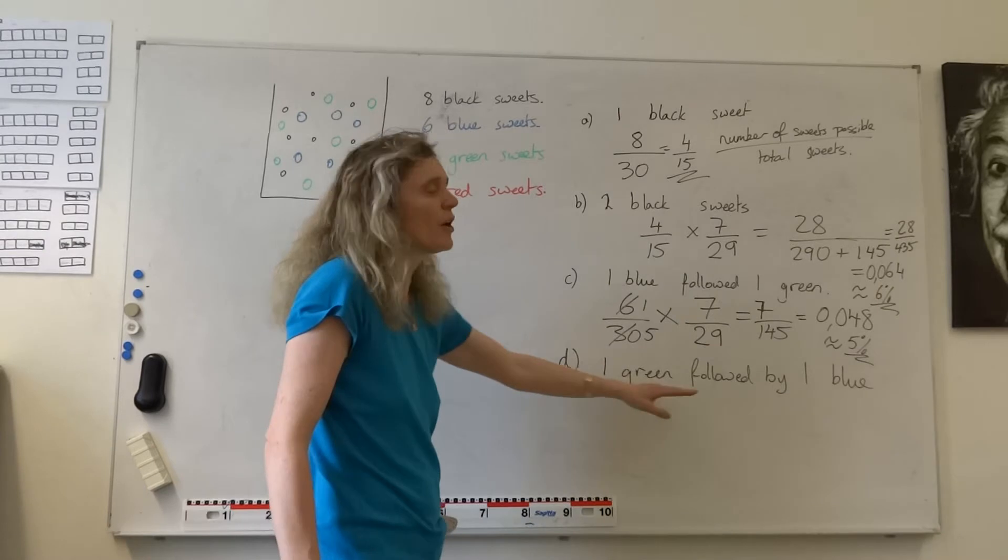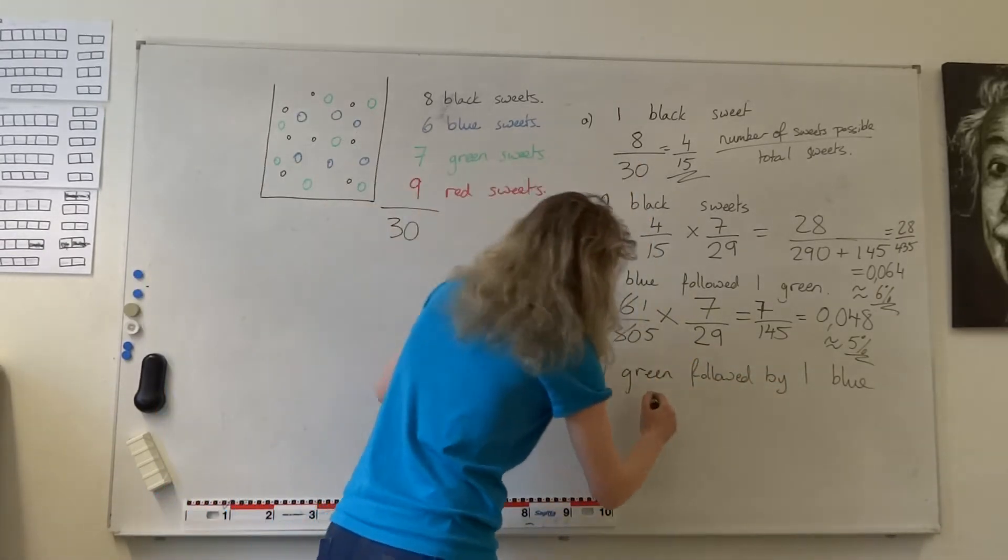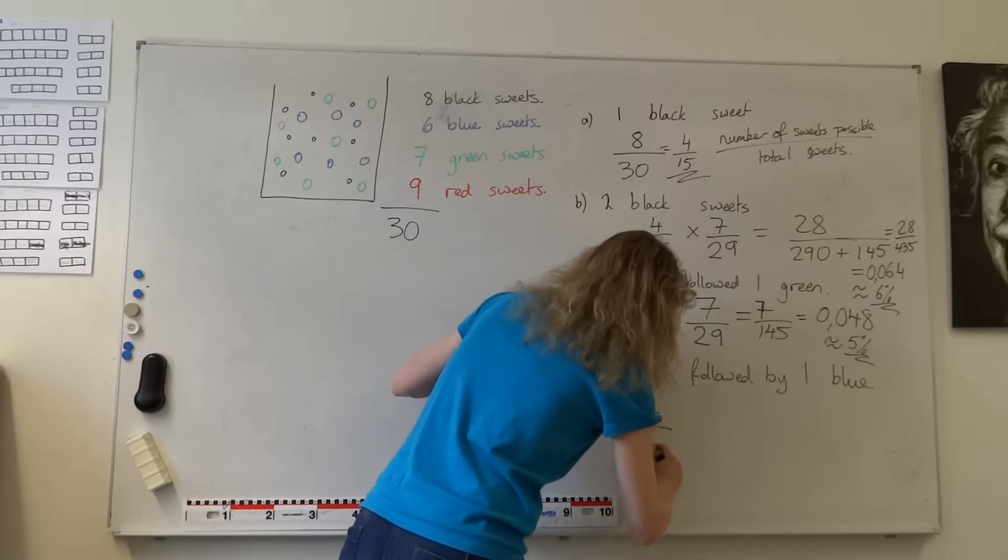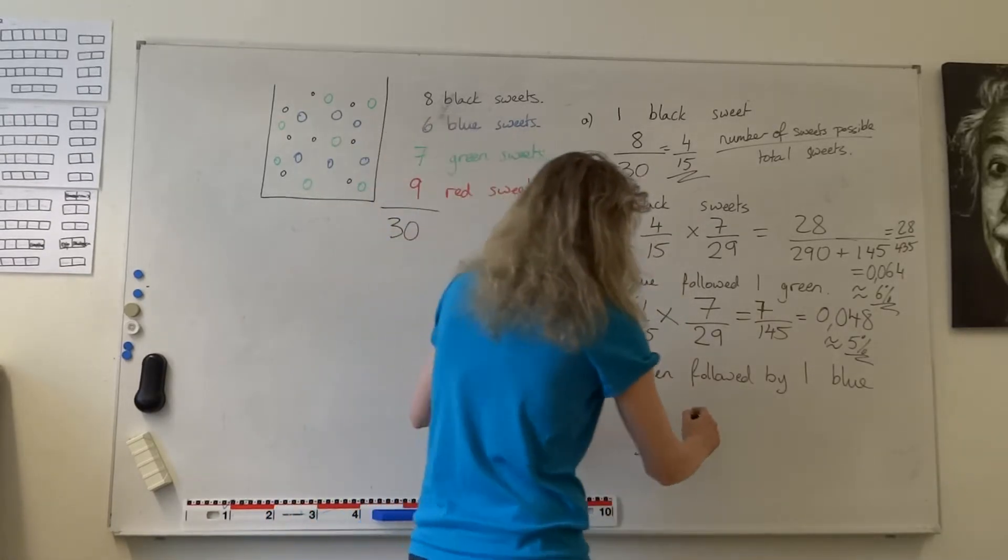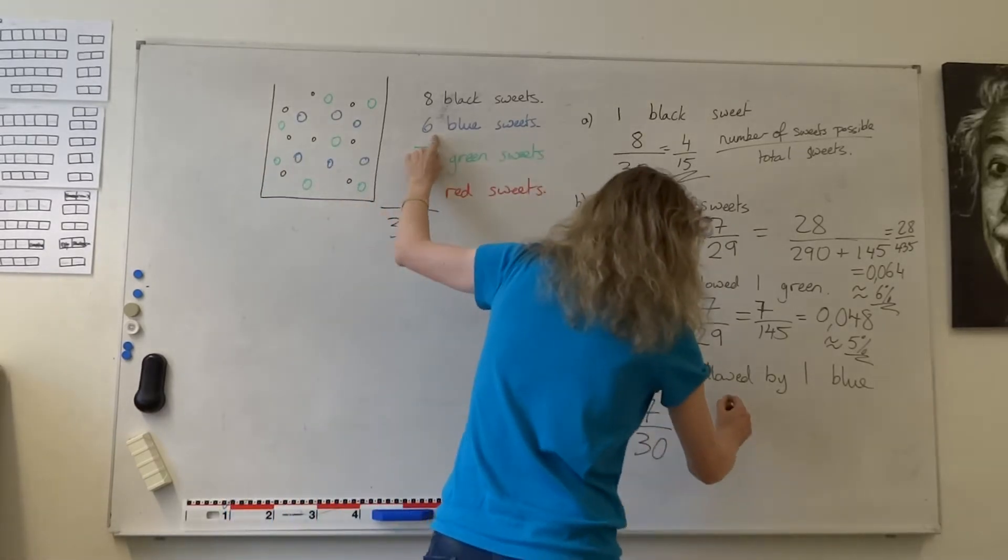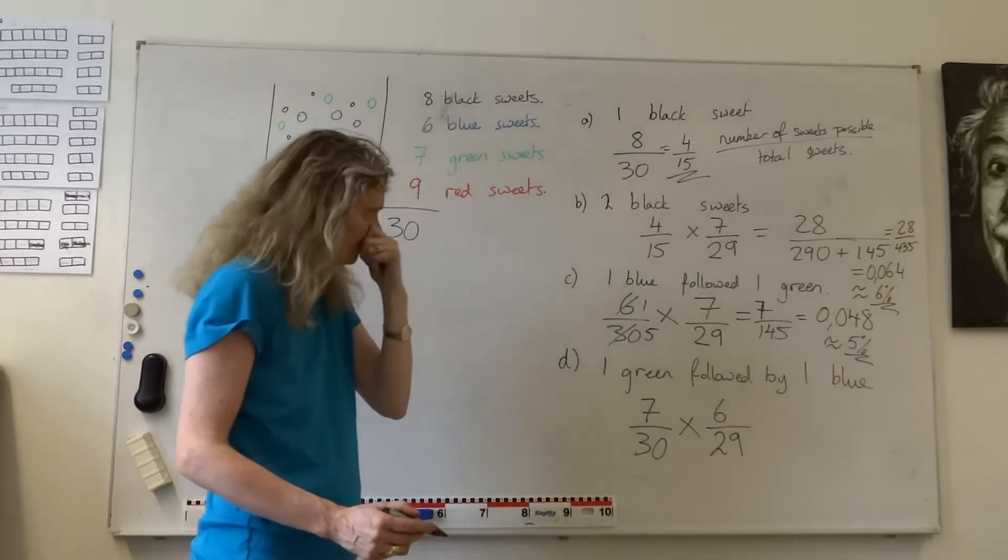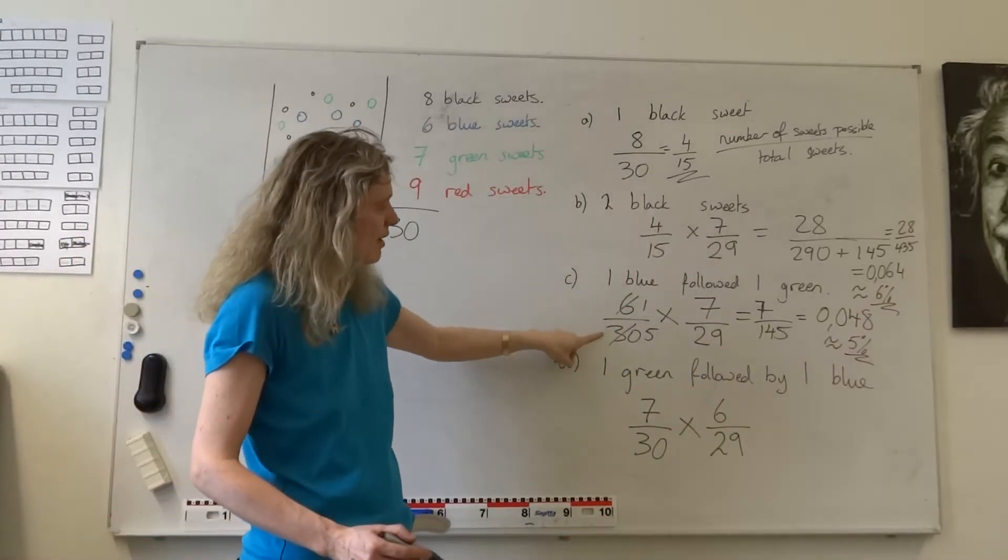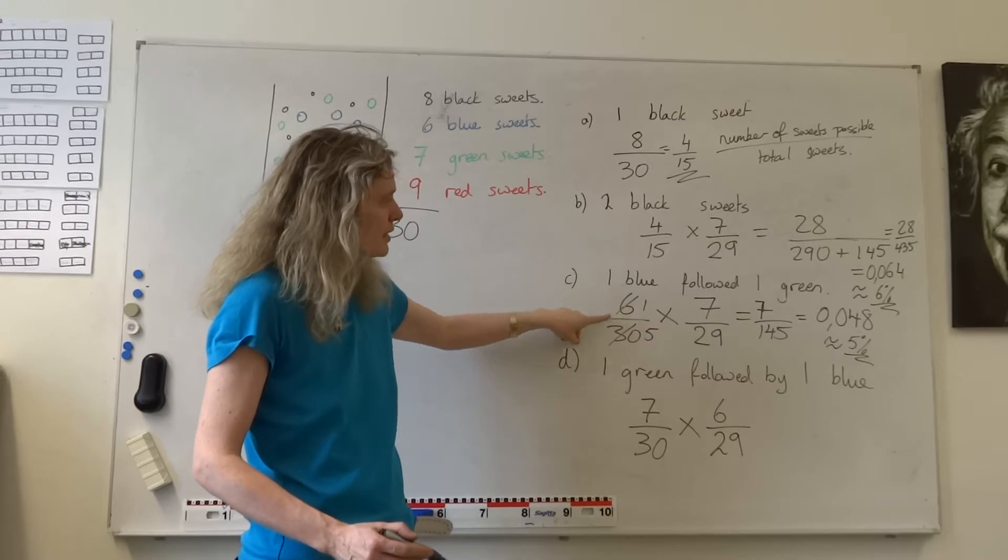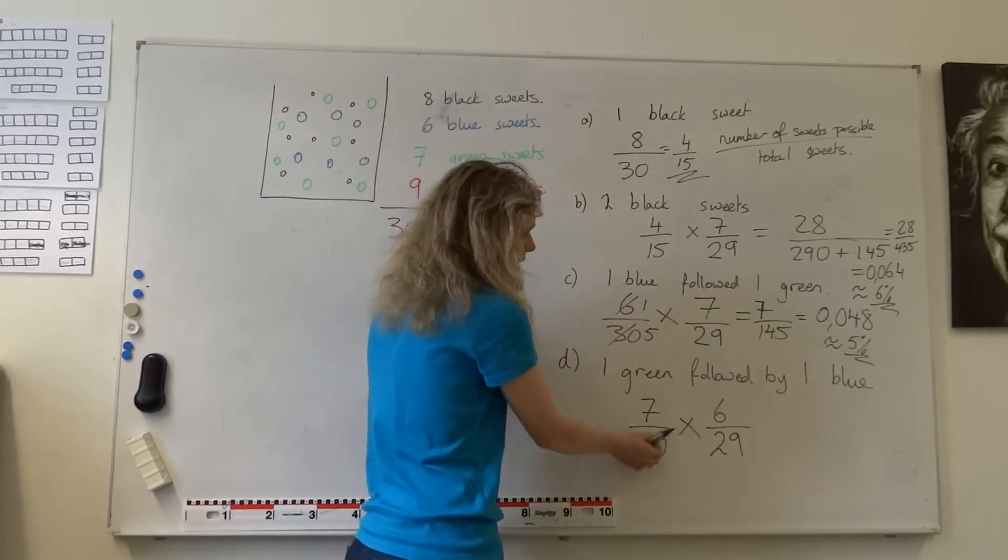What about a green followed by a blue then? Well, the chance of me getting a green would be 7 thirtieths, followed by the chance of me getting a blue. Well, the blue, there are six blue, but there are only 29 sweets left in the bag. And look, do you see the similarity? Six thirtieths times seven twenty-ninths. Here, seven thirtieths times six twenty-ninths.